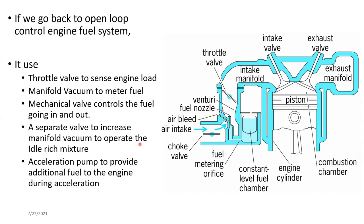Afterwards, we had another issue: when we suddenly accelerate, the throttle valve suddenly opens. The fuel suction is interrupted, but sudden acceleration means we need more power and more fuel suddenly. However, it works the other way around — when the throttle valve is suddenly opened, the intake manifold vacuum drops, so the amount of fuel going inside actually reduces. To fix that, a separate component called an acceleration pump was fixed in.